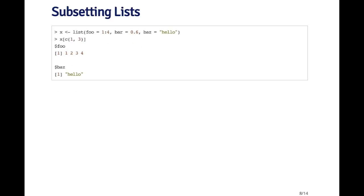If you want to extract multiple elements of a list, you need to use the single bracket operator. For example, if I want the first and the third element — which are the foo and baz elements — I can pass the numeric vector c(1, 3) to x using the single bracket operator, and that returns a list with the elements foo and baz. You cannot use the double bracket or the dollar sign operators when you want to extract multiple elements of a list.